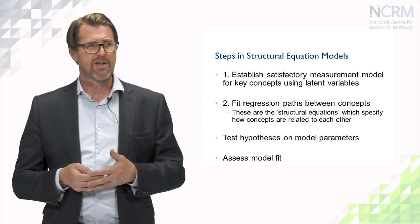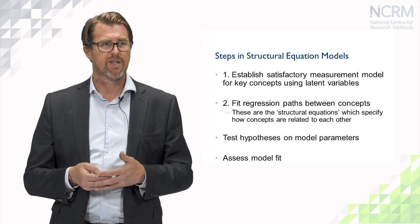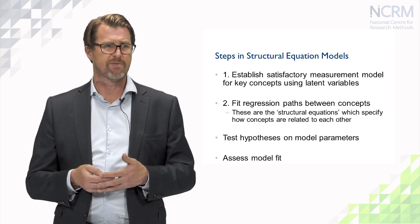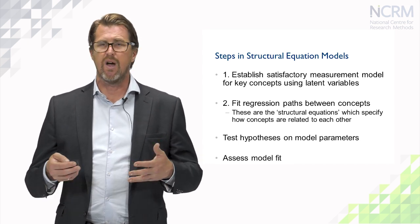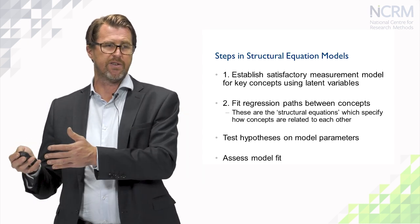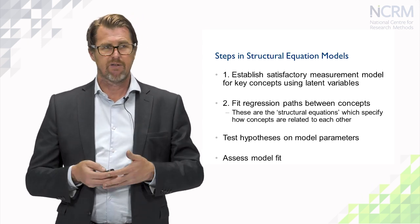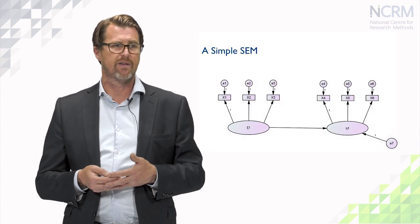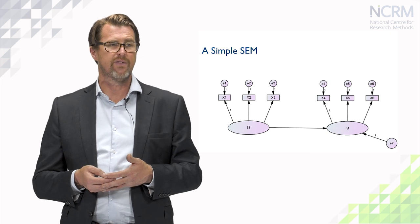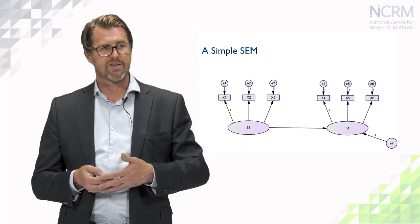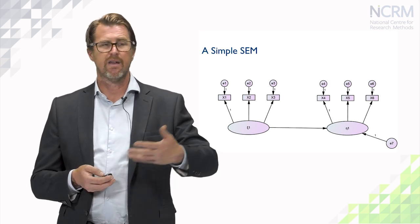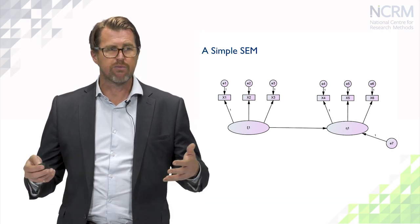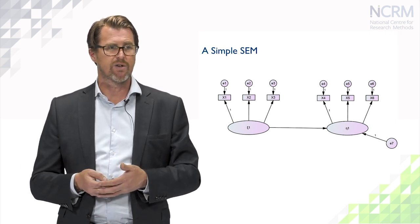We've already seen the measurement part of the model. Here we're just extending what we saw in the previous video using confirmatory factor analysis to incorporate regressions between the measured concepts. This is a very simple structural equation model — it's really equivalent to a bivariate regression model where we are regressing a dependent variable on a single independent variable. But in this context, we now have latent variables rather than directly observed variables. So eta1 here is the dependent variable, and psi1 is the independent variable — the exogenous variable. We have a disturbance term for that regression, and we're going to estimate a value for beta, which tells us the relationship between eta1 and psi1.